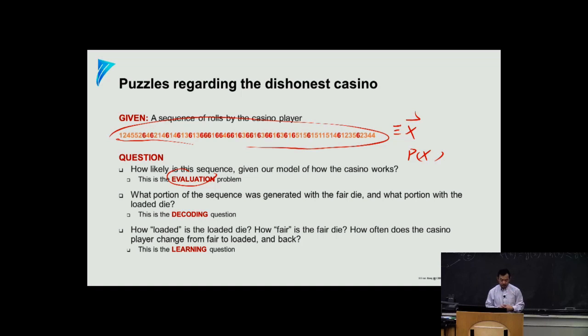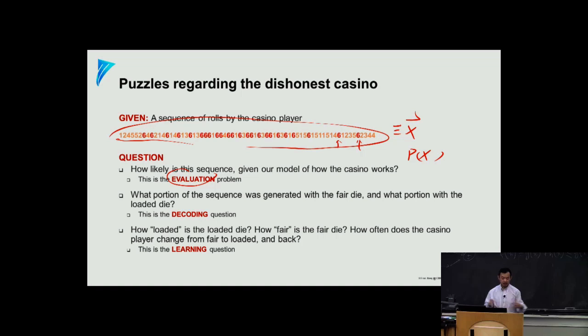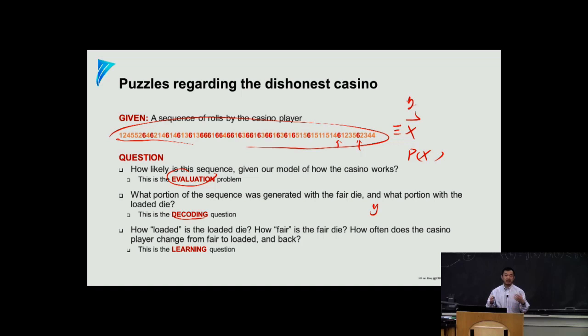The second question is to be more aggressive and say: the probability tells me this is very unlikely. Maybe once in a lifetime I'd see this, but not today. So you ask what might be the status of each roll — is this a fair die or loaded? You are going to infer maybe a portion or the entirety of the sequence in terms of their underlying dice status. This is called a decoding question — you basically want to induce another random variable y next to x, and what is the probability of y given x.